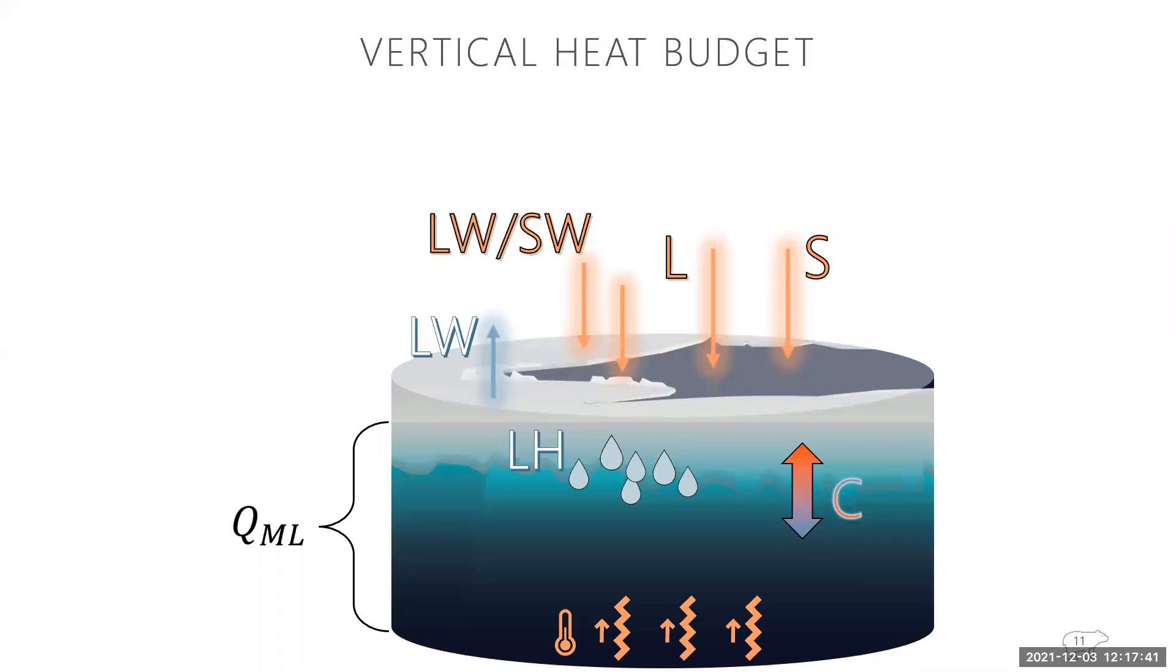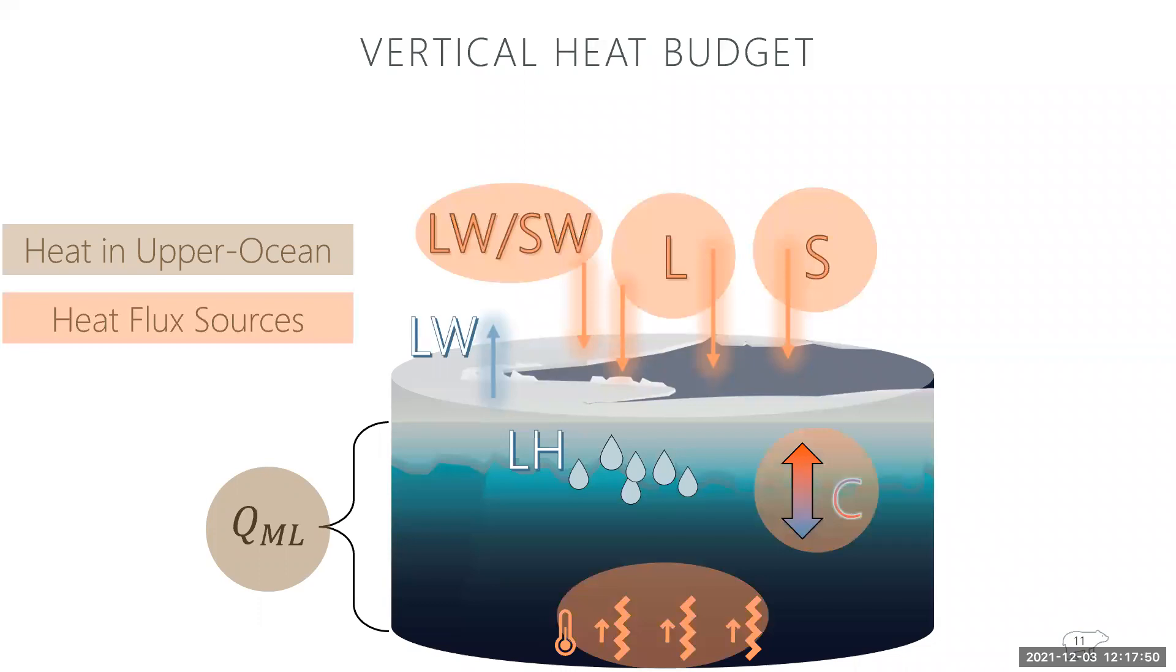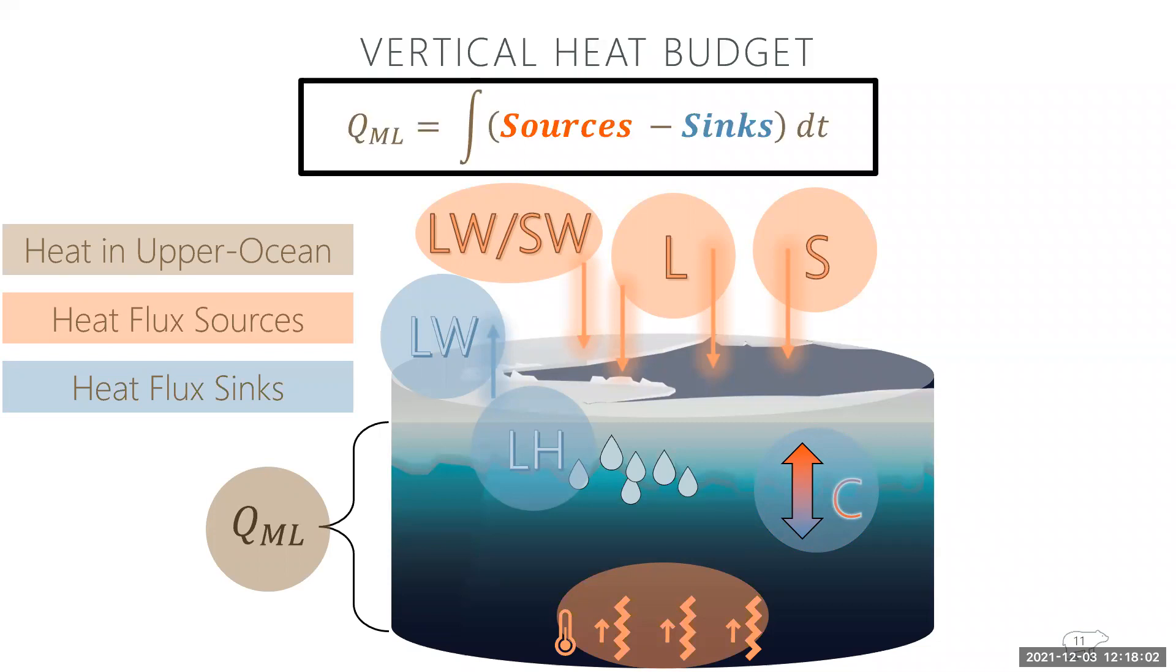So putting these terms all together into a formula. QML here represents heat in the upper ocean. And then these terms in orange represent the heat flux sources. And the terms in blue represent the heat flux sinks. And together these terms can be expressed by this formula, which is the heat content of the upper layer is the integral of heat flux sources differenced from the heat flux sinks throughout a solar season. And so the integral represents the solar season and Dt represents each individual measurement at every half hour.